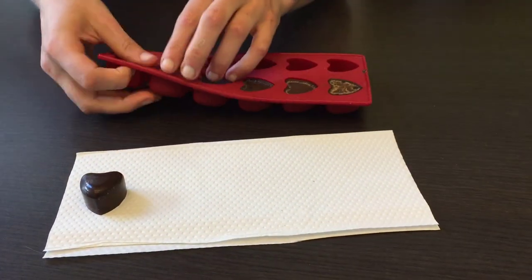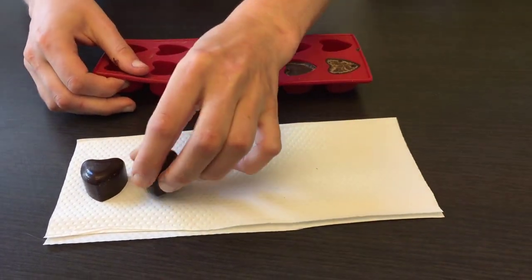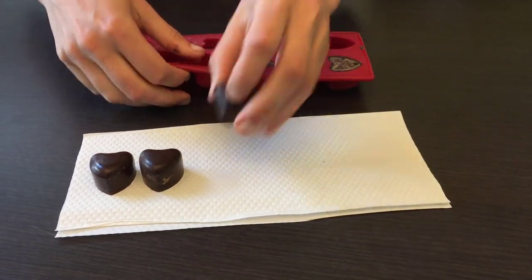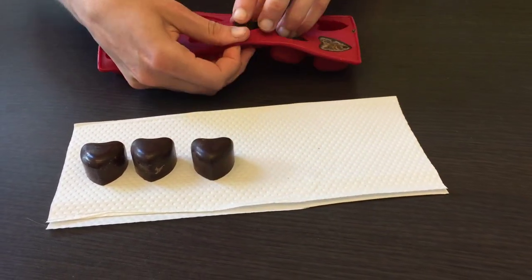Now that it's been a couple hours, let's take a look at the result of our experiment. Taking the chocolate out of the mold, we can see that it has indeed retained the shape of the mold.